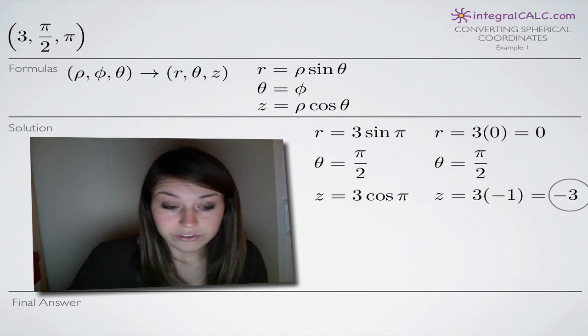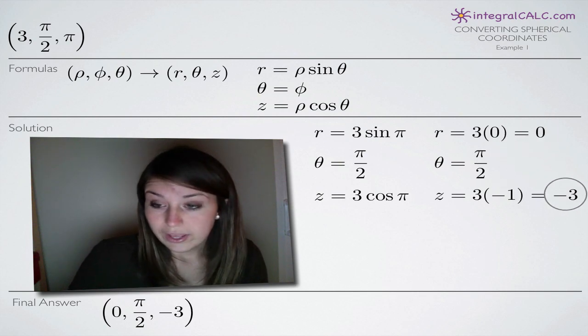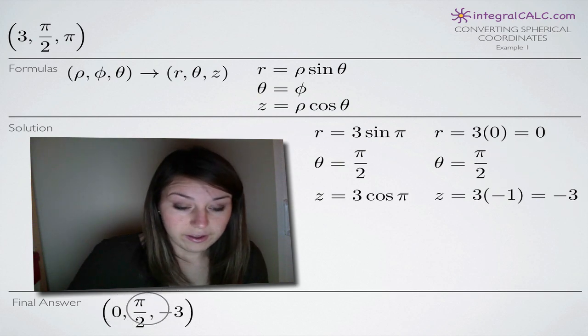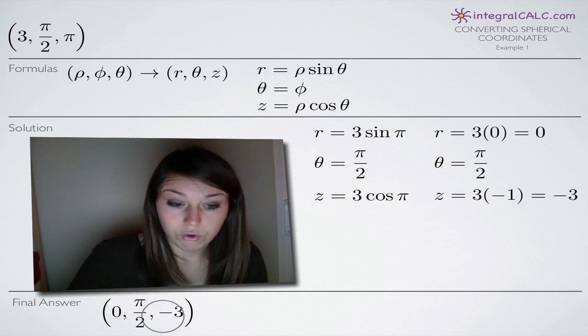we put these three values together in the order r, θ, z, and that will give us our cylindrical coordinate. So our final answer ends up being (0, π/2, -3), and this is in the form r, θ, z, which is what we need for cylindrical coordinates.